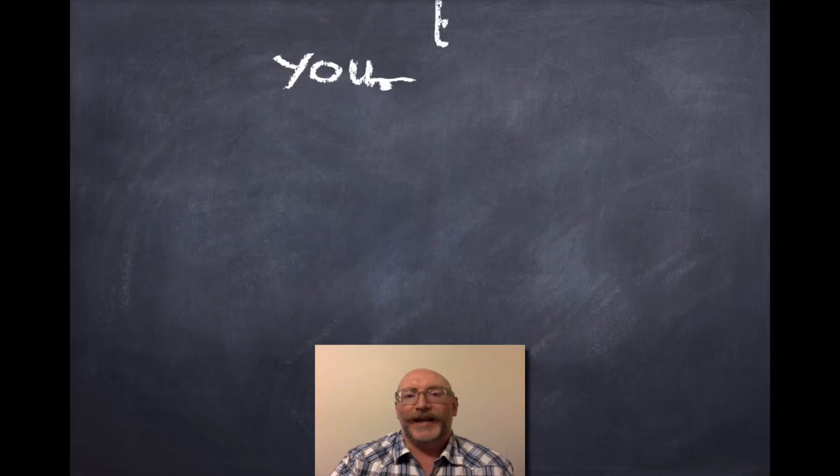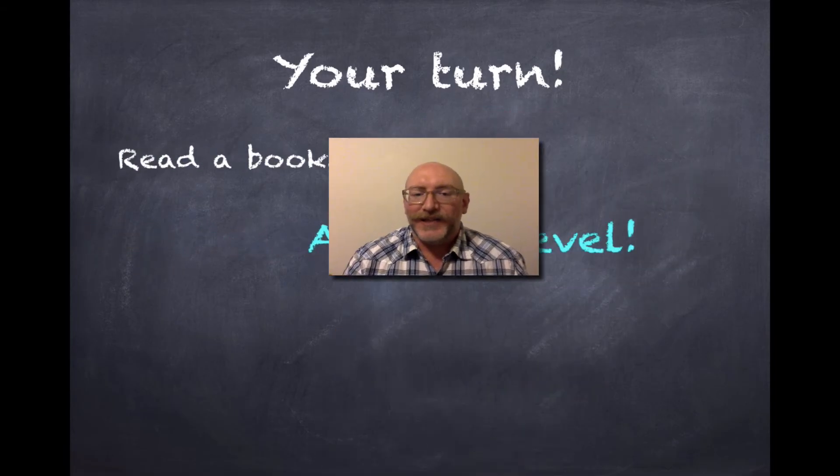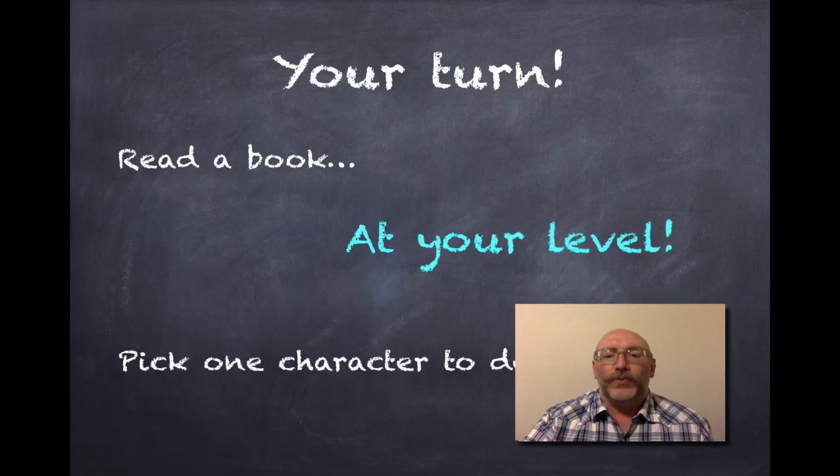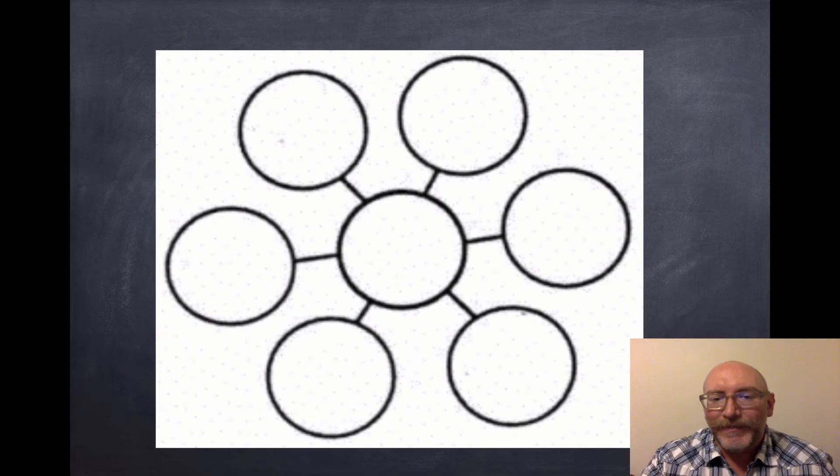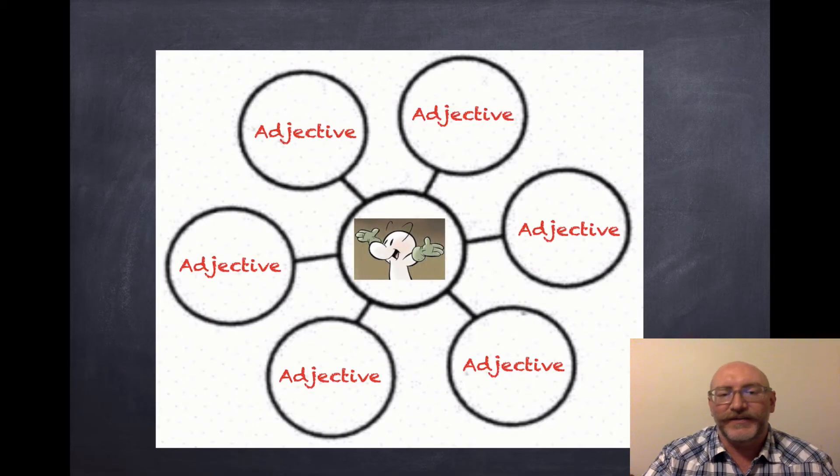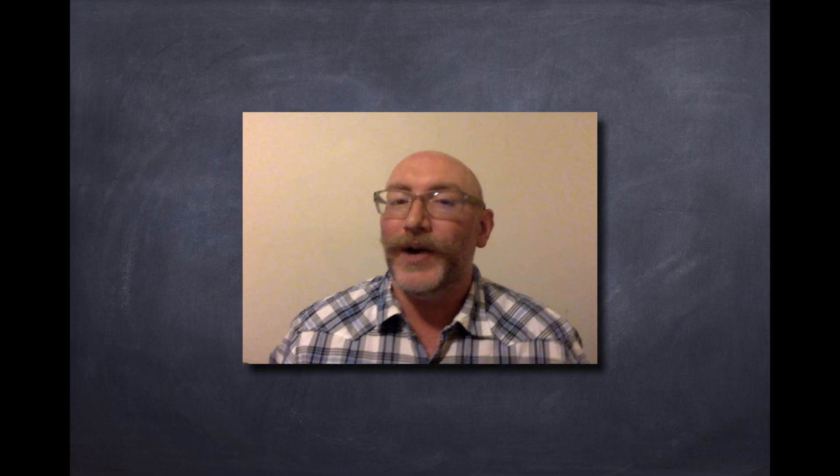...is to create a bubble map of your own. I want you to read a book. As always, make sure that the book is at your level. Pick one character to describe. You're going to construct a bubble map. You're going to pick one character and you'll use adjectives that describe that character. And then tomorrow we're going to learn a new thinking map that will allow us to describe more than one character at one time.